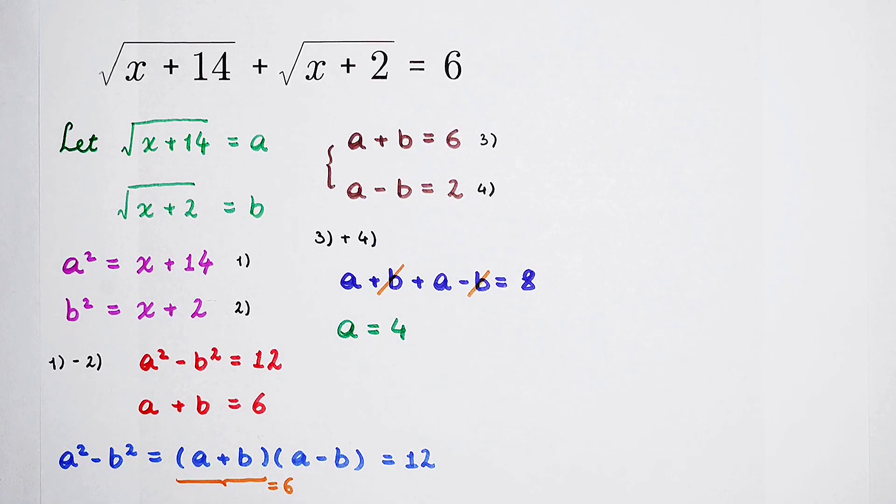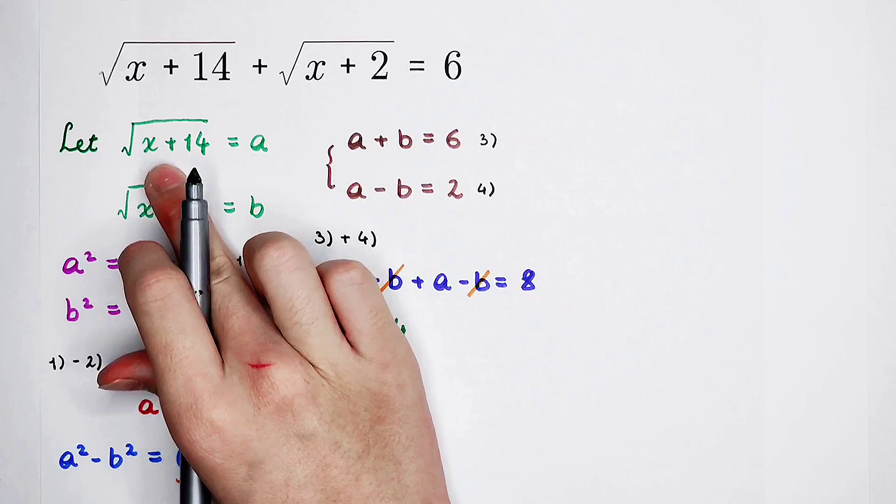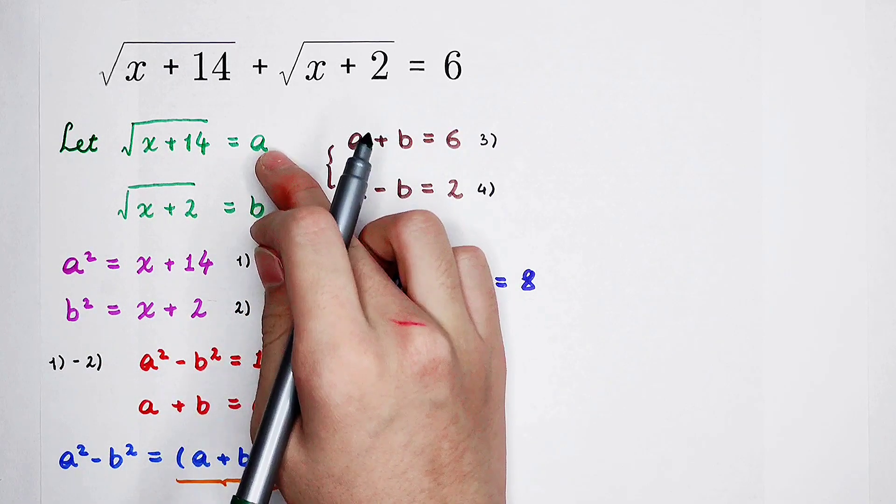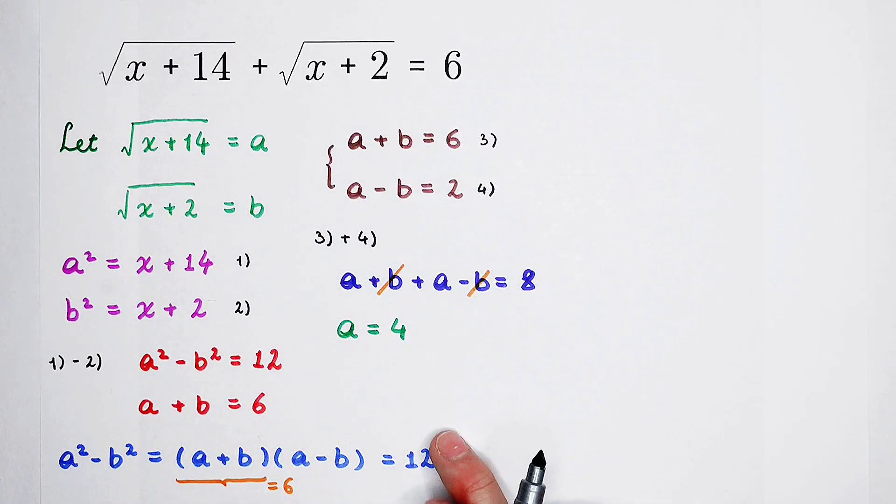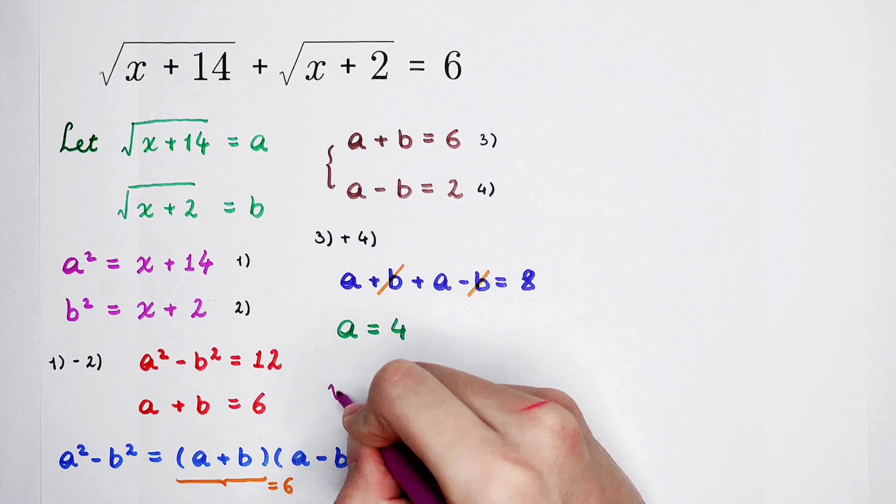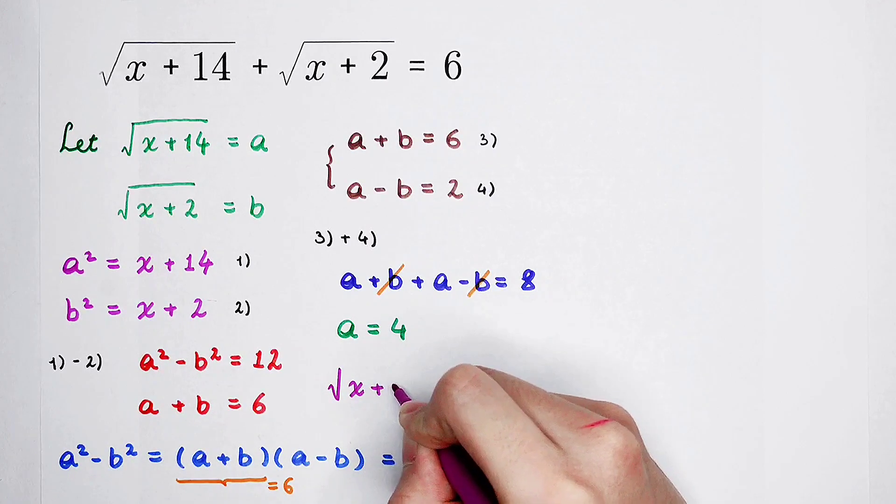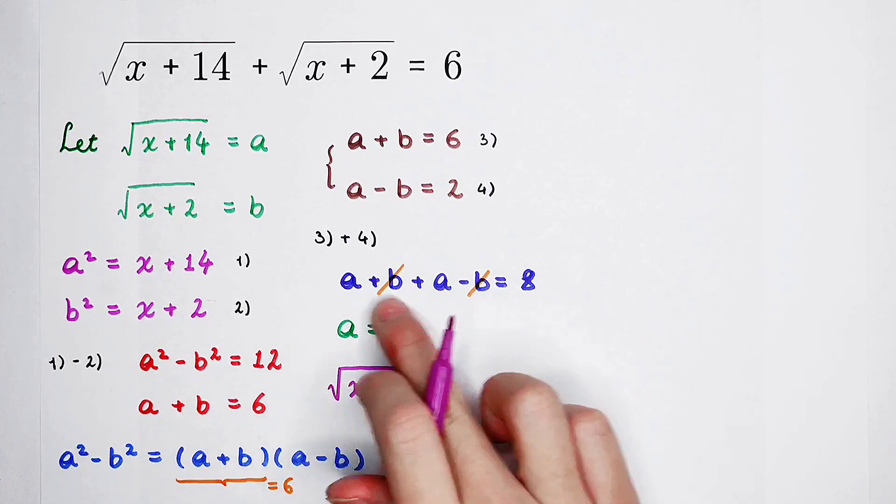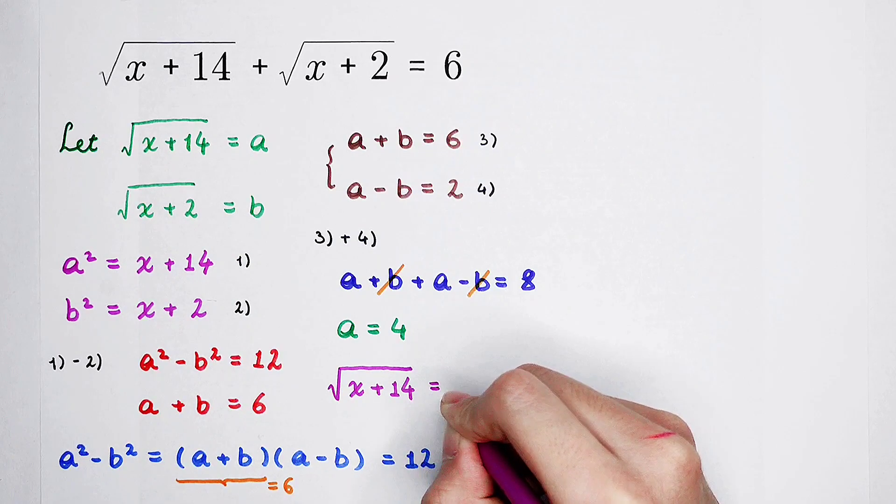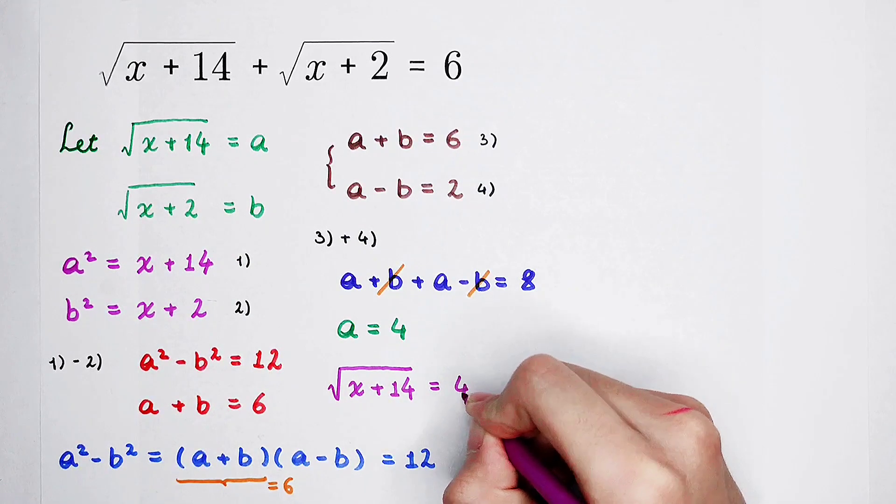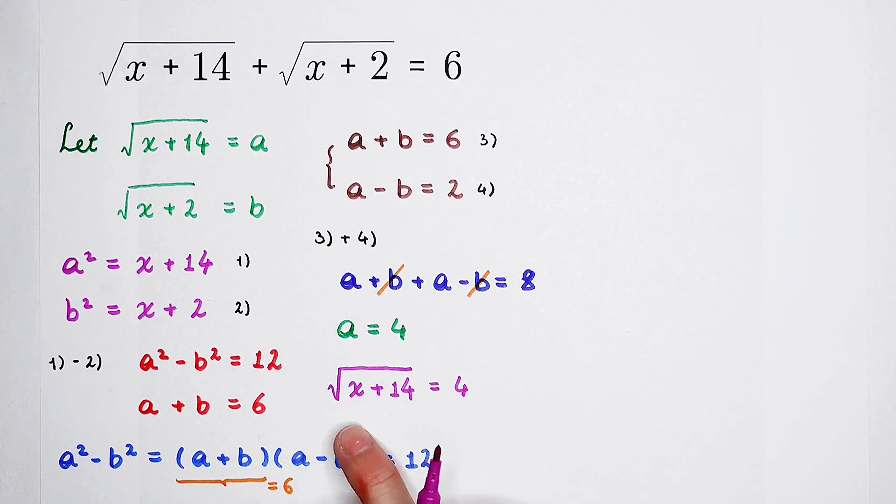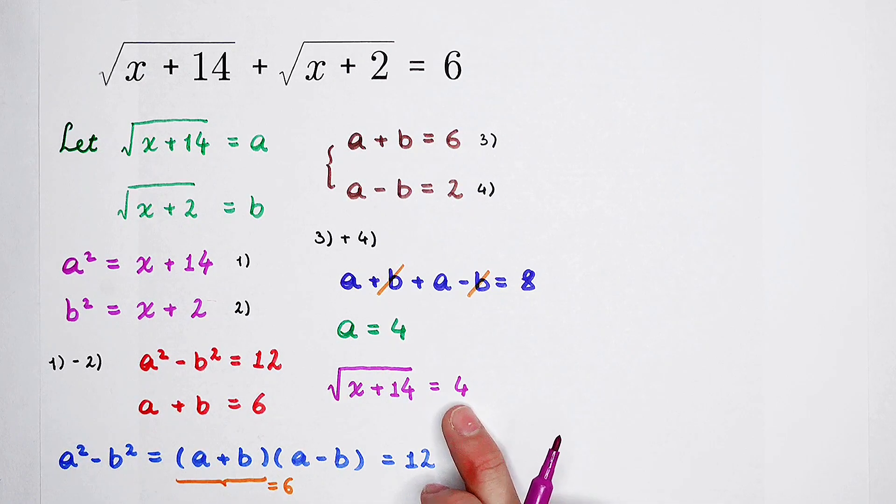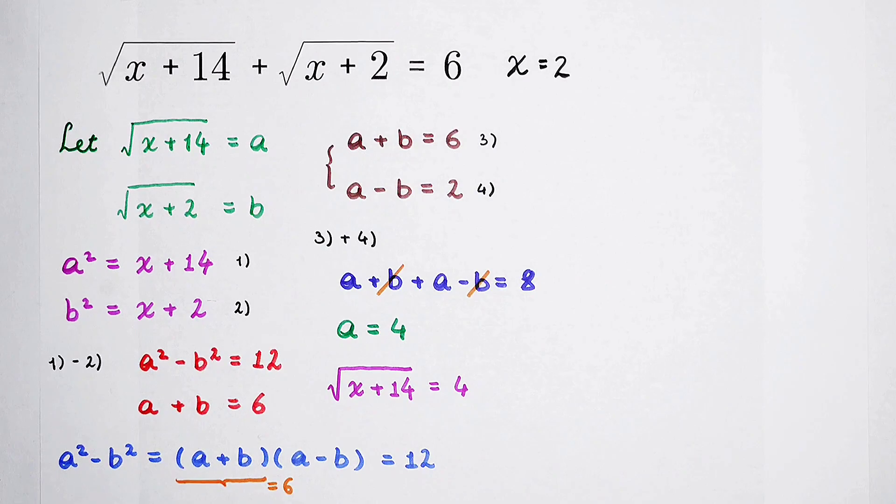That means, square root of x plus 14 is 4. And square root of both-hand size, x plus 14 is 4 squared is 16. So, now, substitute this result into this equation. Square root of x plus 14 is 4. So, square root of both-hand size, x plus 14 is 4 squared is 16. So, x plus 14 is 16. So, x is 2. Now, stop. I'm going to show you the other wonderful way. We should do it in our second method.